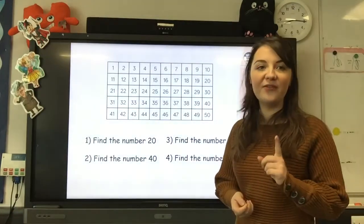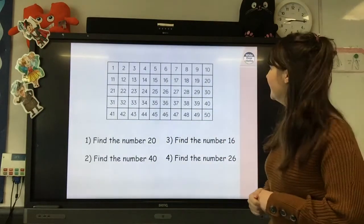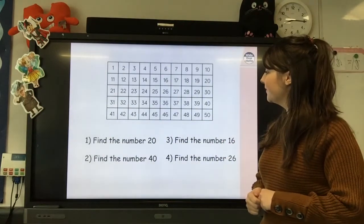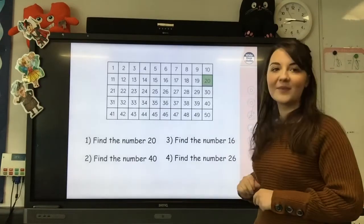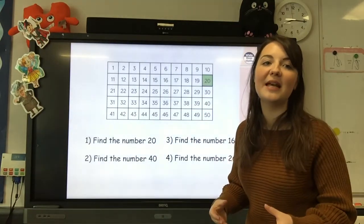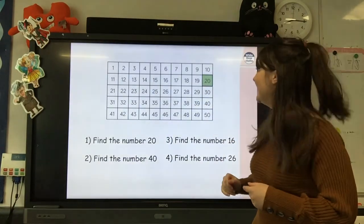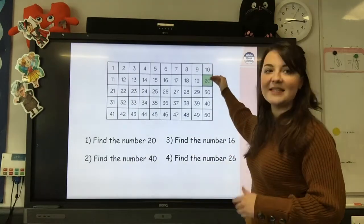I would like you to first find the number 20 on your 50 square. Okay, there it is. We know that 20 is 2 tens, so we can count down our tens here. 1 ten is 10, 2 tens is 20.